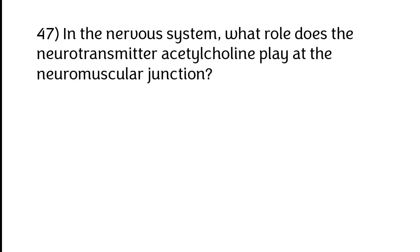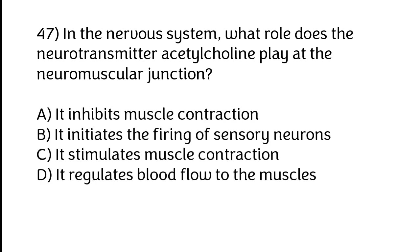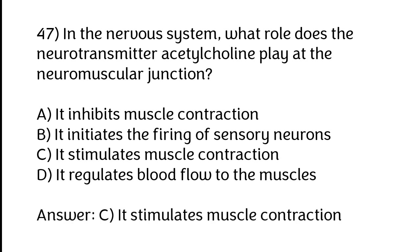In the nervous system, what role does the neurotransmitter acetylcholine play at the neuromuscular junction? Options: A) It inhibits muscle contraction, B) It initiates the firing of sensory neurons, C) It stimulates muscle contraction, D) It regulates blood flow to the muscles. The correct answer is option C, it stimulates muscle contraction.